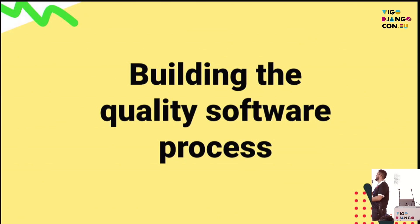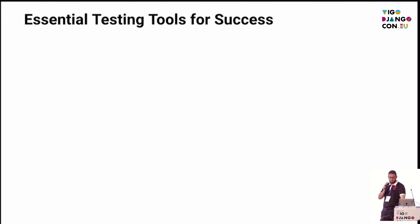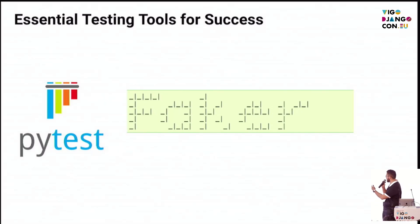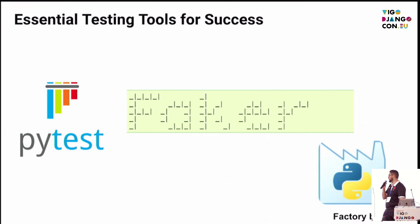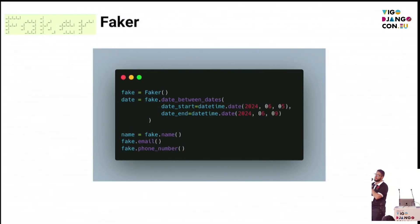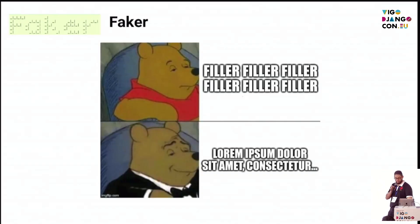Arriving in the second section — building quality software — these are essential testing tools for success. The first is PyTest. It's amazing — you can create good descriptions about the test, the format, the style, and much more. The second is Faker. It can provide many fake records. It's amazing because you can represent your model or your domain class using this tool. You can provide names, emails, phone numbers, dates, and a lot of types of test data. You should use Faker for the same reason you use Lorem Ipsum on the front-end side.